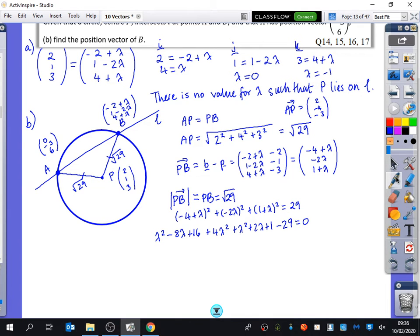So, we get lambda squared, minus 8 lambda, plus 16, plus 4 lambda squared, plus lambda squared, plus 2 lambda, plus 1. And I'm also going to subtract the 29, and make it equal 0, because it's a quadratic. So, I've got 6 lambda squared, minus 6 lambda, and I've got 17, minus 29, minus 12. So, I've got lambda squared, minus lambda, minus 2. So, it's got lambda equals 2, and lambda equals minus 1.